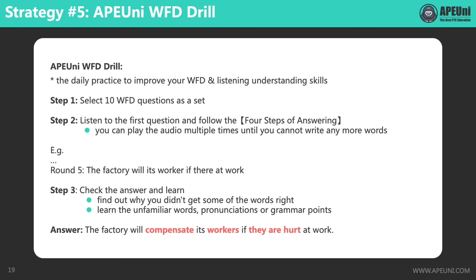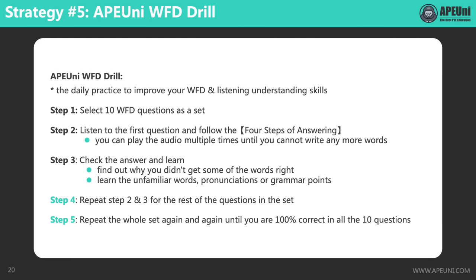In step three, we need to check the answer and learn why we didn't get all words correct. Is it because we don't know the word, or we know the word but are not familiar with its pronunciation? For some other words, we may have misspelled or got the word forms wrong — then we need to learn its spelling and related grammar points. For example, I didn't write down 'compensate' because I don't know the word, so I need to look it up in a dictionary to learn the pronunciation, meaning, and spelling. And I wrote 'worker' instead of 'workers' — this can be avoided by analyzing the context: there can't be only one worker in the factory, so it should be 'workers' with S.